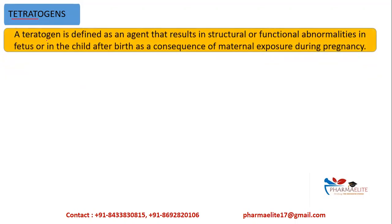Any drug that in pregnancy may cause side effects to the fetus is called a teratogen, and the process is called teratogenesis. A teratogen is defined as any agent that results in structural or functional abnormalities in the fetus, or in the child after birth, as a consequence of maternal exposure during pregnancy. Any drug the mother consumes during the nine months of pregnancy can cause abnormalities or functional difficulties in the fetus.